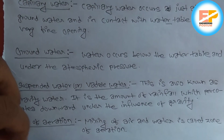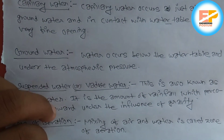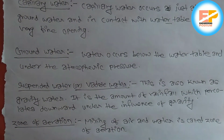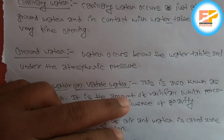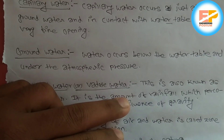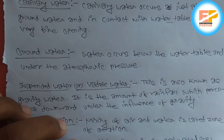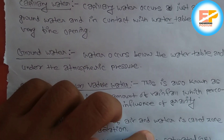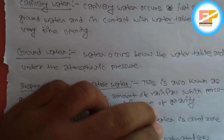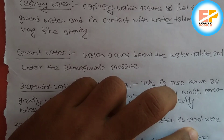Moving on to the last — that is zone of saturation. Saturation means groundwater fills all the interstices, meaning all the very small holes in the saturated zone.